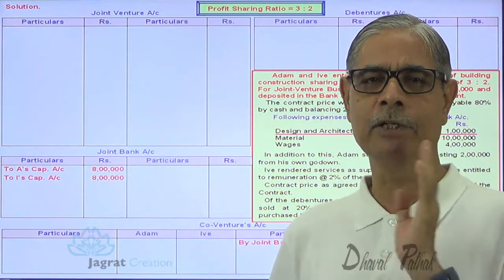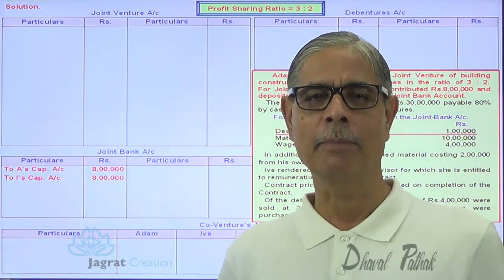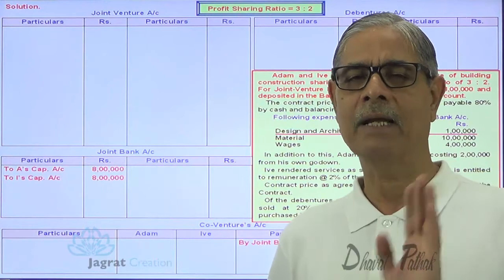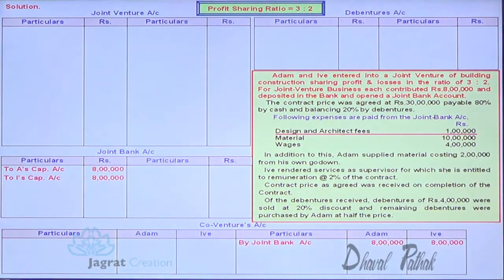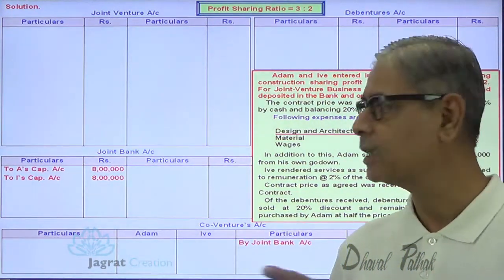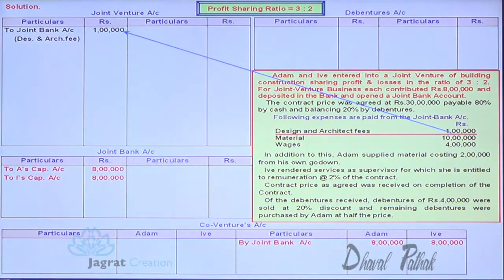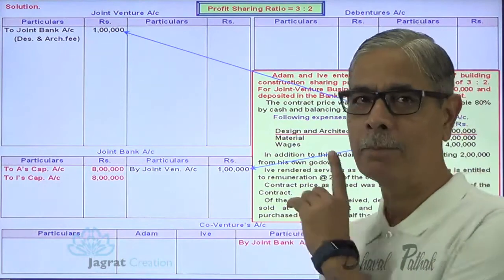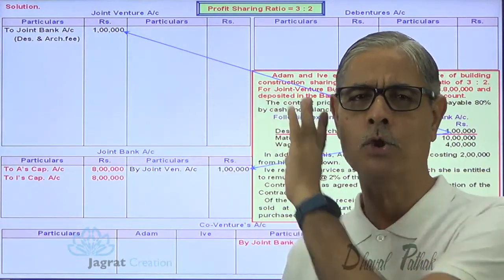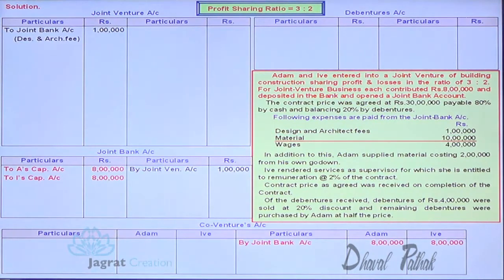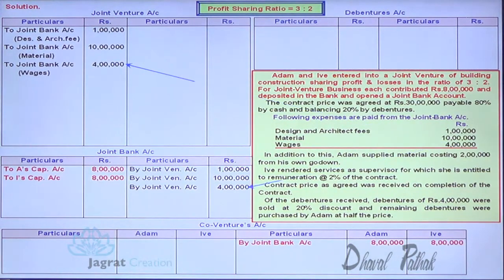All incomes, gains, and revenues will be credited to joint venture account. The difference of joint venture account will be identified as profit, and it will be distributed amongst partners as agreed. At the end, partners' capital will be redeemed. This expense paid will be debited to joint venture account; the payment is made from joint bank account, so it will be recorded on the credit side of joint bank account — joint venture account debit to joint bank account credit. Material purchased and paid 10 lakhs from joint bank account: joint venture account debit to joint bank account credit. Wages are paid the same way — joint venture account debit to joint bank account credit.